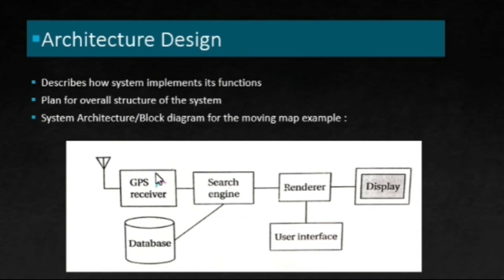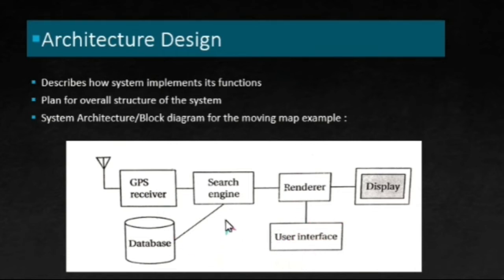The system architecture contains a GPS receiver, search engine, renderer — which is used to display the moving cursor of the user — a display module, user interface, and a database. This is the overall structure of our Moving Map. Even though it provides an overall idea about what the functions are and how it is implemented, we still lack information about hardware and software details. We can refine this overall system architecture into hardware architecture and software architecture.